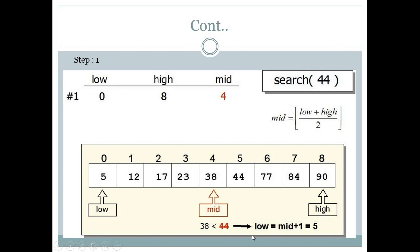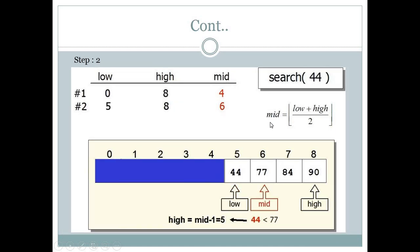Now our low is 5 and high remains 8 (from mid plus 1 equals 5). We again find the mid value: low plus high divided by 2 is 5 plus 8 equals 13, divided by 2 equals 6.5. Since fractions are not considered, we take only 6, so the new mid is at index 6.